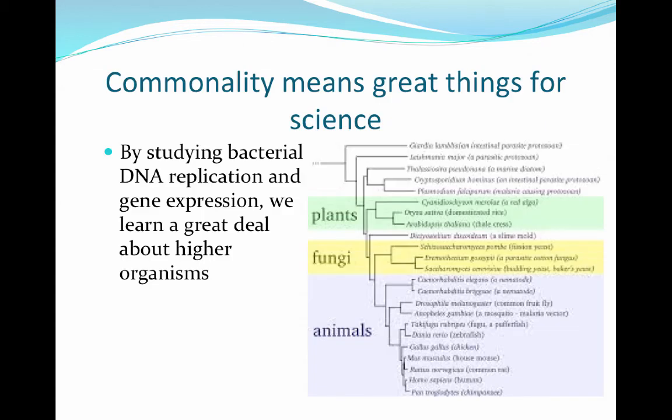This common substance called DNA is going to be contained in really all species, and that means really good things for science. It actually allows us to study bacteria, which have very small genomes, and apply those findings to individuals with large genomes. For example, E. coli has one chromosome that's circular. We can study E. coli and determine things about similar sequences in our own DNA, and we humans have 46 chromosomes.